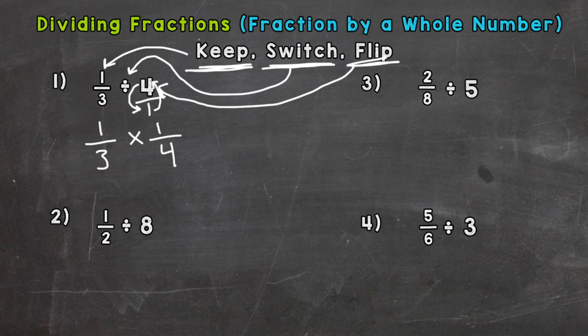So now our problem is set up, so we can multiply straight across. One times one is one, and three times four is twelve. Now this fraction can't be simplified. The greatest common factor between one and twelve is one. So we are done. One-twelfth.